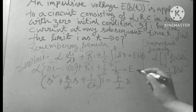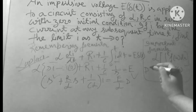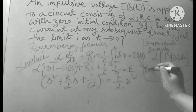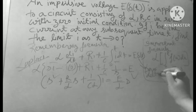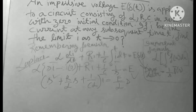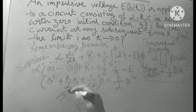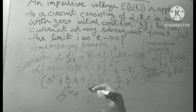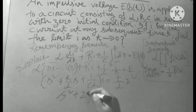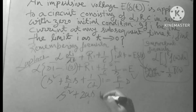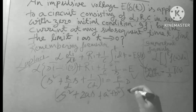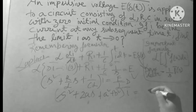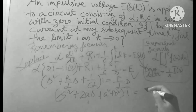This equation comes from the Dirac delta function on the right-hand side. The equation can be rewritten as: (S² + 2AS + A² + B²)·Ī = E/(L·S), where we introduce parameters A and B for convenience.